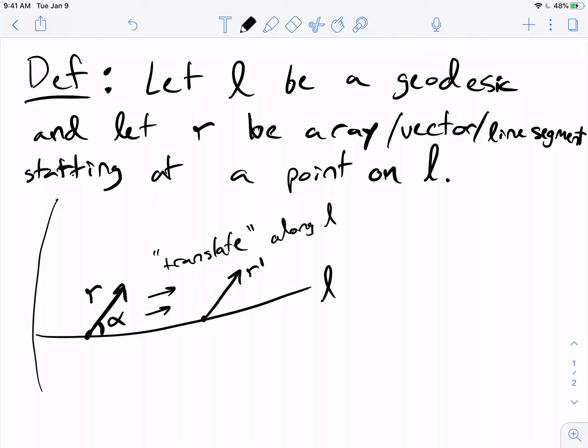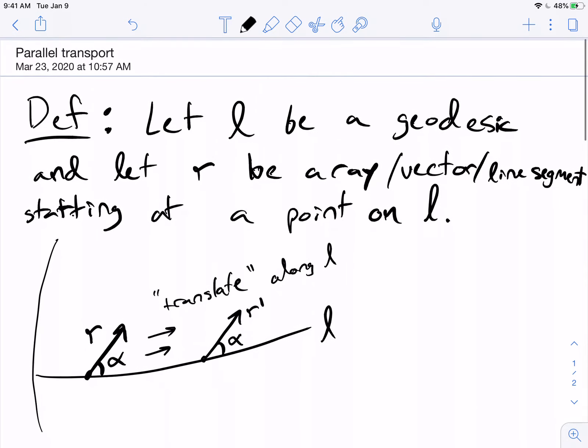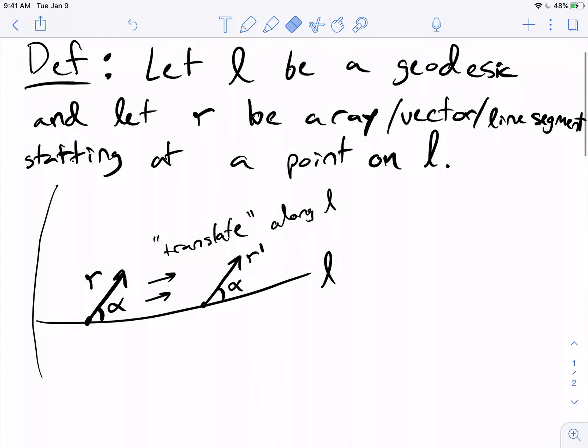And the important thing is, I want to keep that angle the same. That's really all I care about, is the angle of this vector with respect to the geodesic L. And if I do that, then this new vector is called a parallel transport of the original.